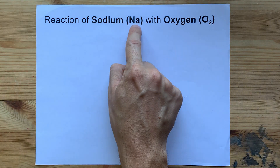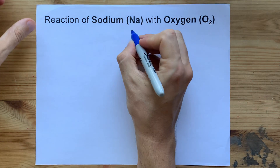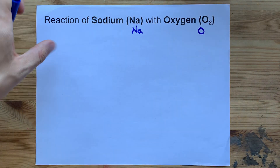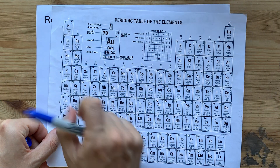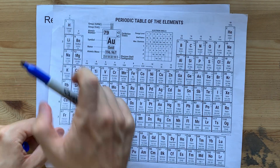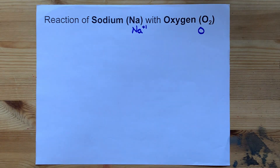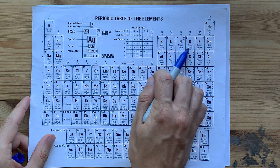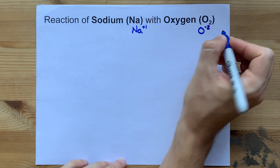Generally, when a metal and a non-metal combine, they form an ionic compound. It's useful to know what charge each of them wants. Because sodium is in the first column, it wants a charge of plus 1 — it wants to have lost 1 electron. Oxygen is 2 electrons short of having a full octet, so it wants a charge of minus 2.